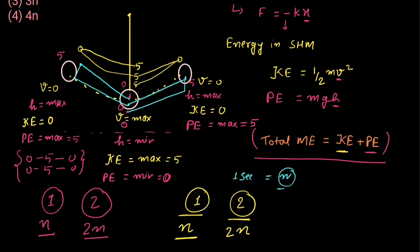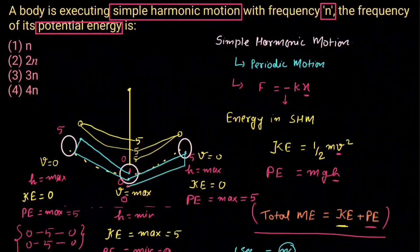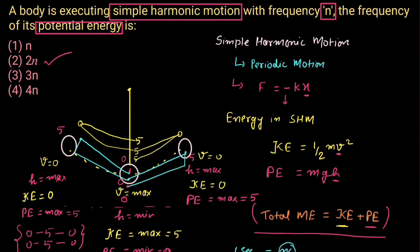This is how we calculate the frequency of kinetic energy as well as potential energy. In this question, we are asked to find the frequency of the potential energy, so our answer is 2n. Thank you for watching. If you still have any doubt, please let me know in the comment section, and don't forget to subscribe to our channel, Doubt Forum. See you in the next video. Take care. Bye bye.